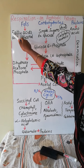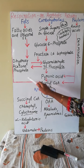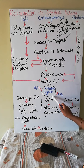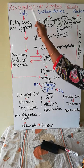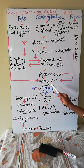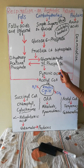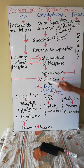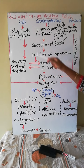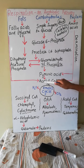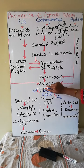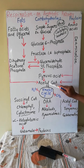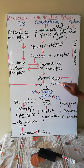Whereas fatty acids get converted into acetyl-CoA and enter into the Krebs cycle. So fat components convert into glycerol → dihydroxyacetone phosphate → glyceraldehyde-3-phosphate entering the glycolytic pathway, while fatty acids enter the mitochondria through acetyl-CoA and continue through the Krebs cycle, finally undergoing oxidation.